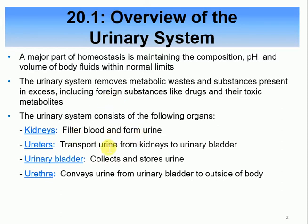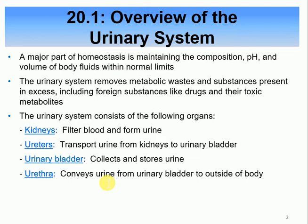The urinary system generally consists of the following organs: two kidneys, which filter the blood to make urine; two ureters, which take the urine from the kidneys to the bladder; the bladder, where urine is stored temporarily until it's time to urinate (also called micturate or void); and the urethra, which takes urine from the bladder to the outside.